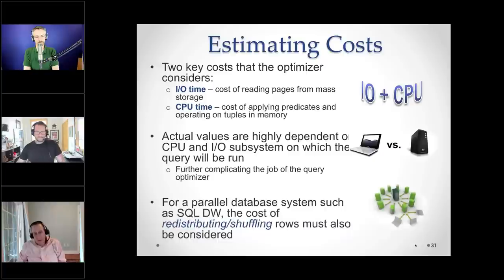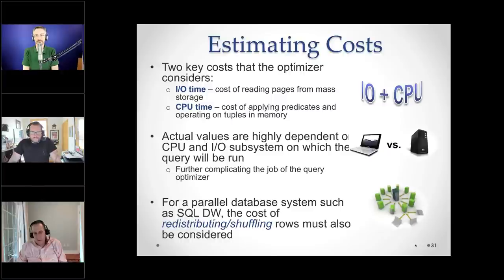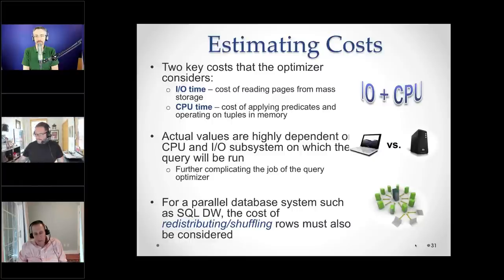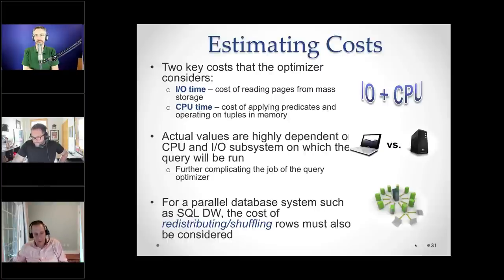This again goes back to the question of why database systems don't look at current hardware when estimating these times — the goal is to get good relative performance, not exact cost. In a parallel database system such as SQL DW, Redshift, or Presto, there's an additional cost to consider: when you have a parallel database system, you sometimes have to shuffle data among the nodes, which is a third cost. I'm going to ignore that since we're not talking about parallel databases today.